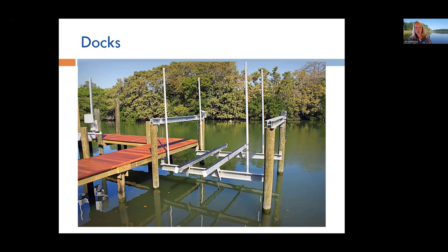First, count the number of homes and docks you can see from the water. If you can't see them due to trees, don't count them — just count what you can see. For docks, the rule of thumb on complex structures is to count how many boat parking places you see. A dock with room for two boats on each side counts as two.